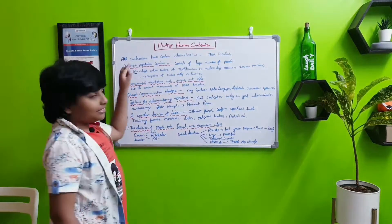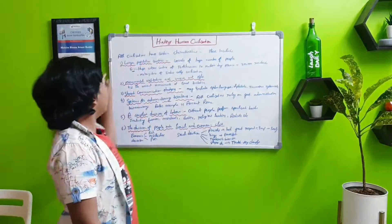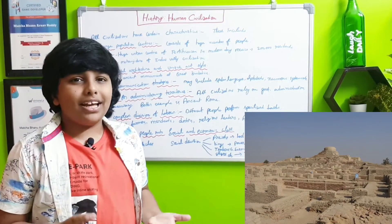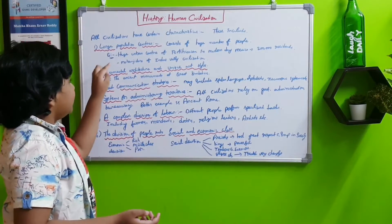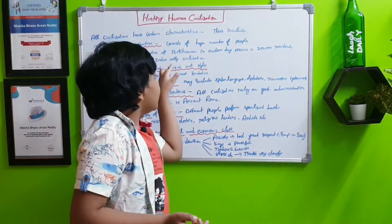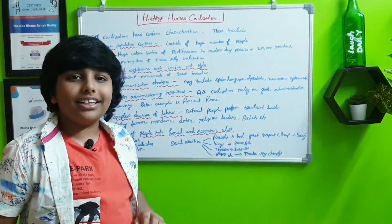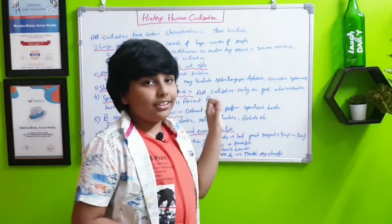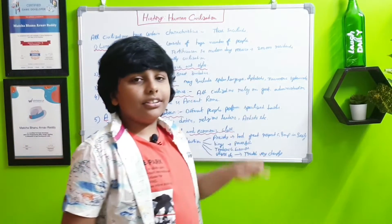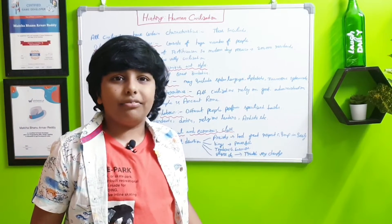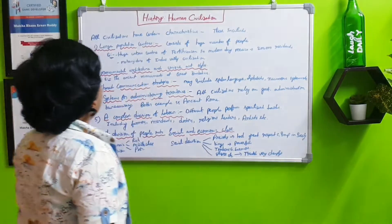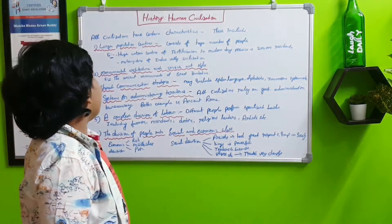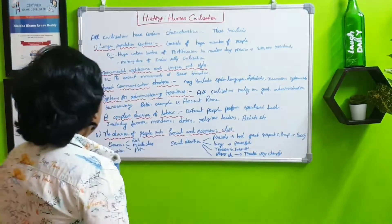All civilizations have certain characteristics. These include large population centers, which are places in a city or civilization where many people exist. For example, huge urban center in Teotihuacan, which is a confusing name, in modern day Mexico, which had 200,000 residents, which is big compared to them, not now. The Indus Valley civilization is another example of large population centers.